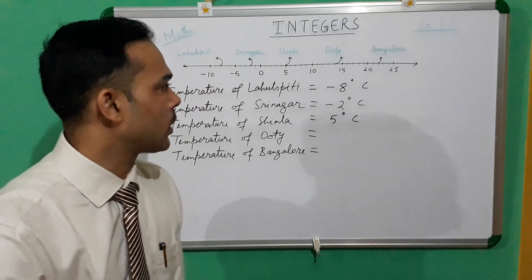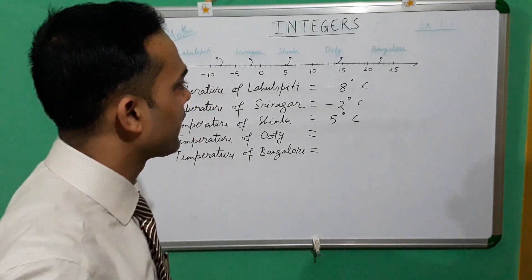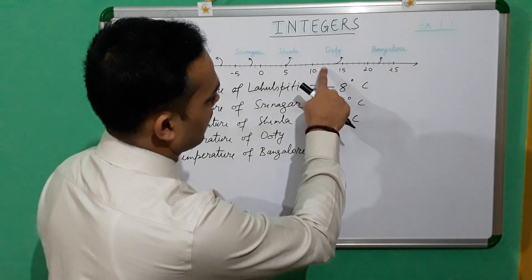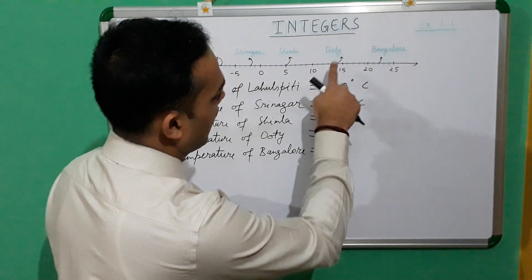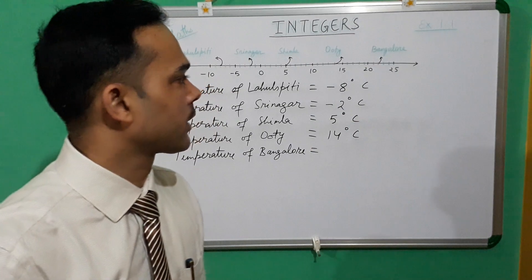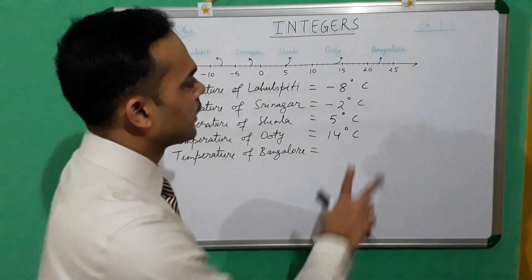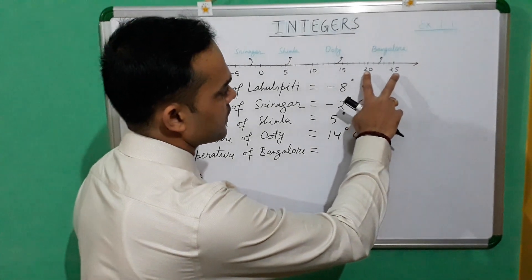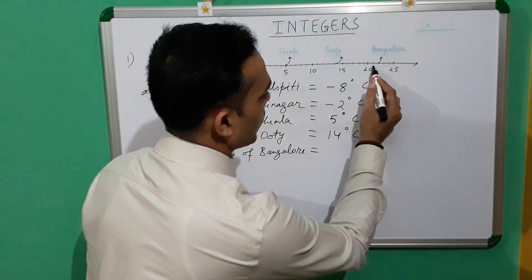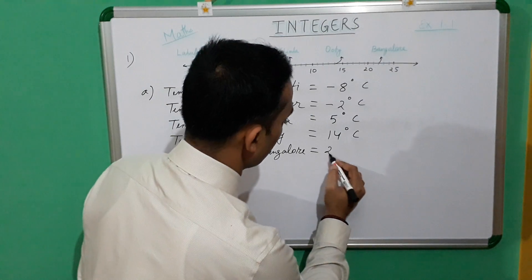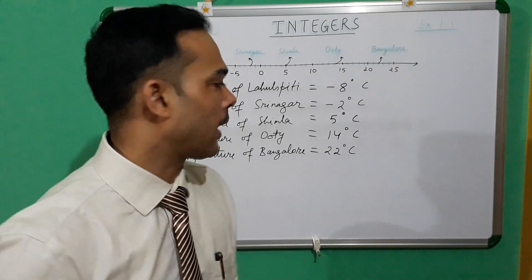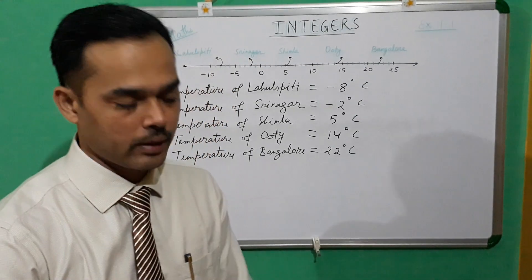After Shimla, let us talk about the temperature of Ooty. The temperature of Ooty is lying between 10 and 15. Counting: 11, 12, 13, 14. That is why the temperature of Ooty is 14 degrees Celsius. Now, the temperature of Bangalore is lying between 20 and 25. On this number line: 21, 22. It means the temperature of Bangalore is 22 degrees Celsius.